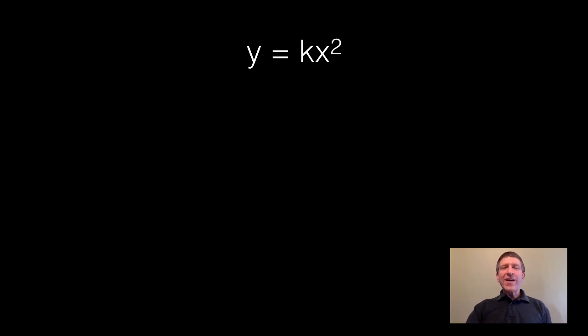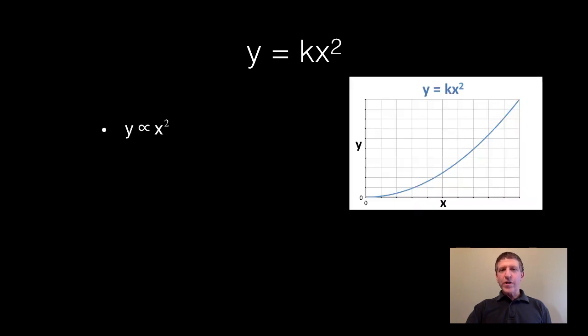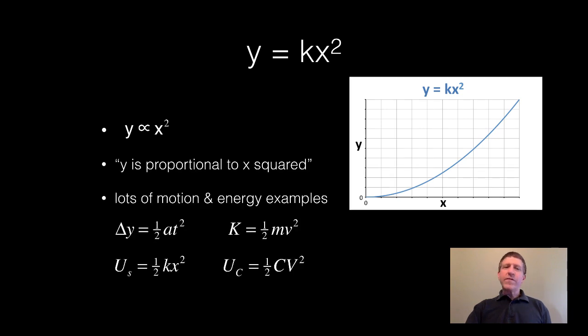Another common relationship is y equals kx squared. You could say y is proportional to x squared. This is what that graph looks like. And that's the way you'd say it. There are a lot of examples of this kind of relationship. Here's a few for motion and energy.